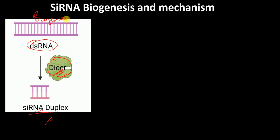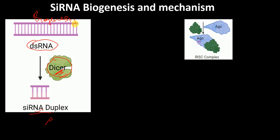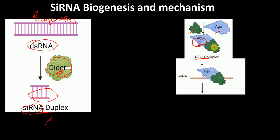This is the biogenesis of siRNA. Once the siRNA duplex is synthesized, other proteins including Argonaute proteins come together with the siRNA, and that results in the formation of the RNA-induced silencing complex, or RISC. Within this RISC, we have the guide strand — a strand from the siRNA that is complementary to our target mRNA — which guides the RISC to the target mRNA.